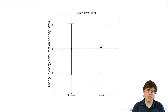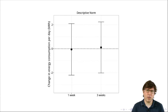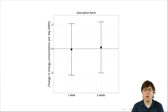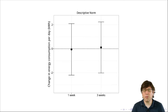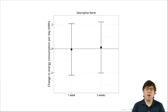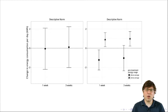They ran this experiment and here's what they found. People who received this information did not change their energy usage — the average change in energy consumption was zero over one week and three weeks. So it seems like a somewhat failed experiment. No experiment has really failed if you learn something, but it seems like this treatment didn't work. But actually, something more interesting was going on. These researchers had hypothesized ahead of time that this treatment would lead to two offsetting effects.